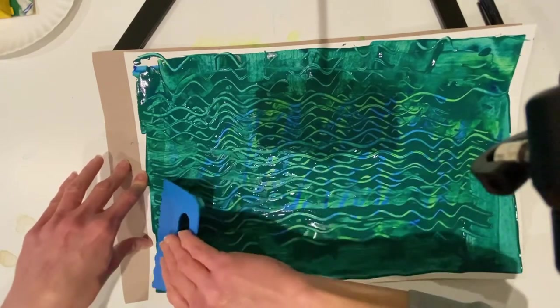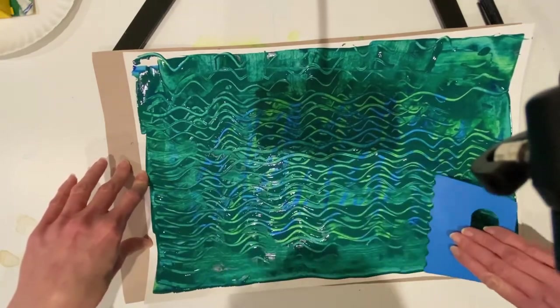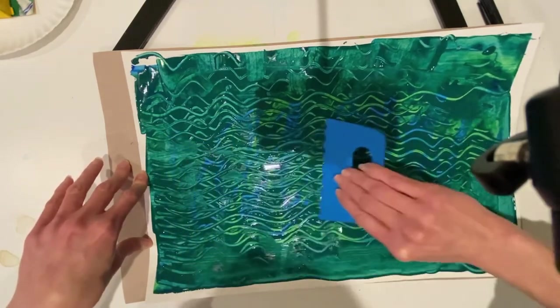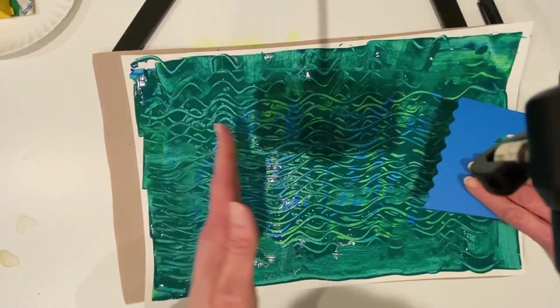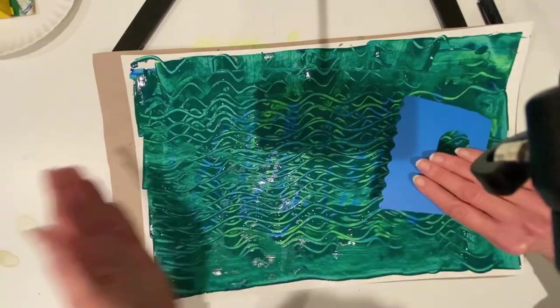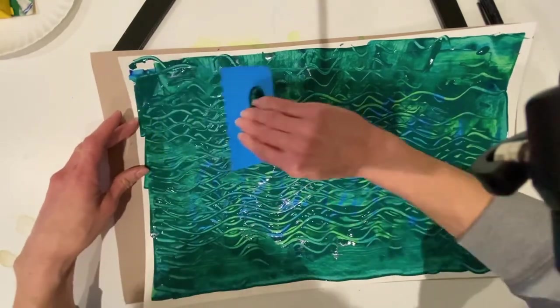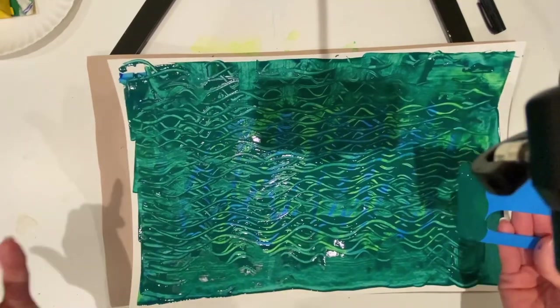Now your paper and the paint is starting to look more like water because you can kind of see that movement from one side to the other side. That's the movement of the water and you want it to look as much like water as we can.